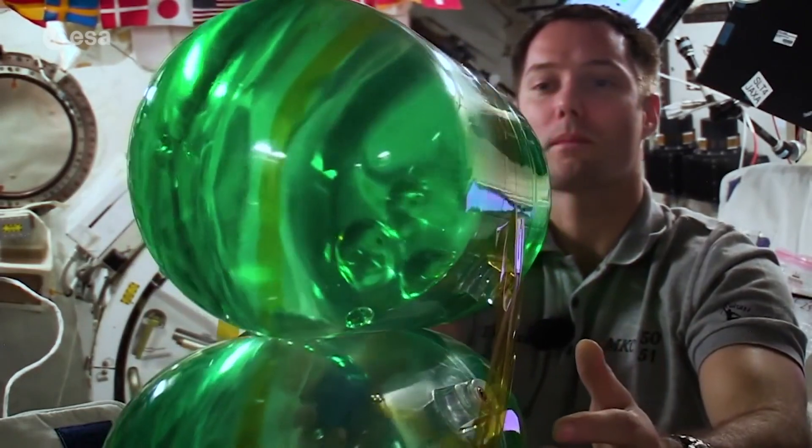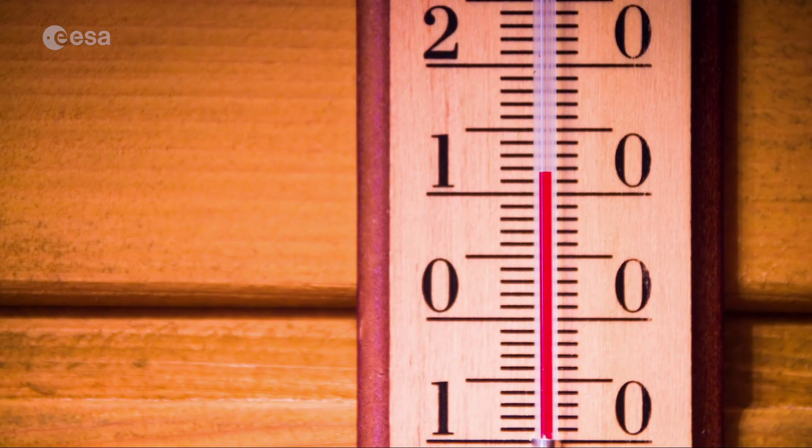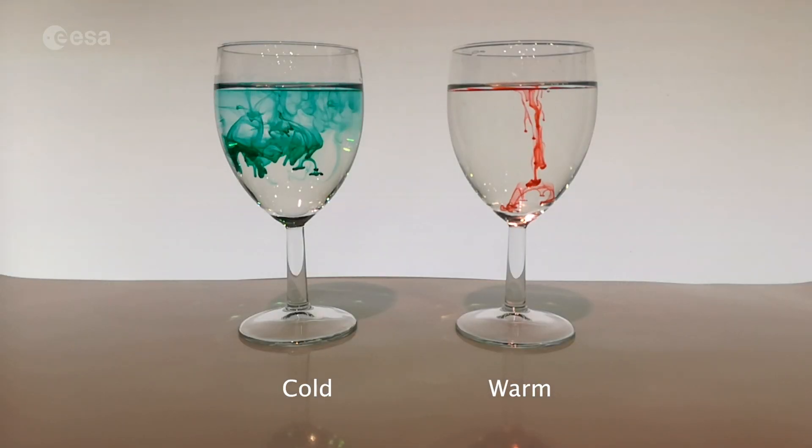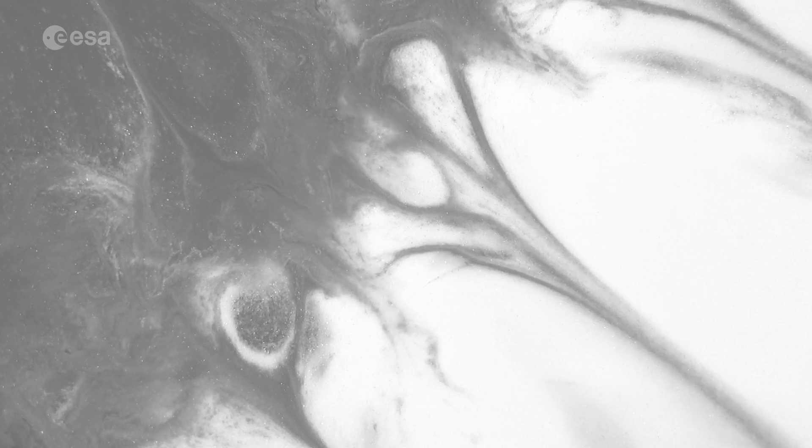When a temperature gradient is applied to a liquid mixture we observe that one mixture's component likes the hot temperature side of the container more than the other. This way the components separate by means of a phenomenon called thermodiffusion.